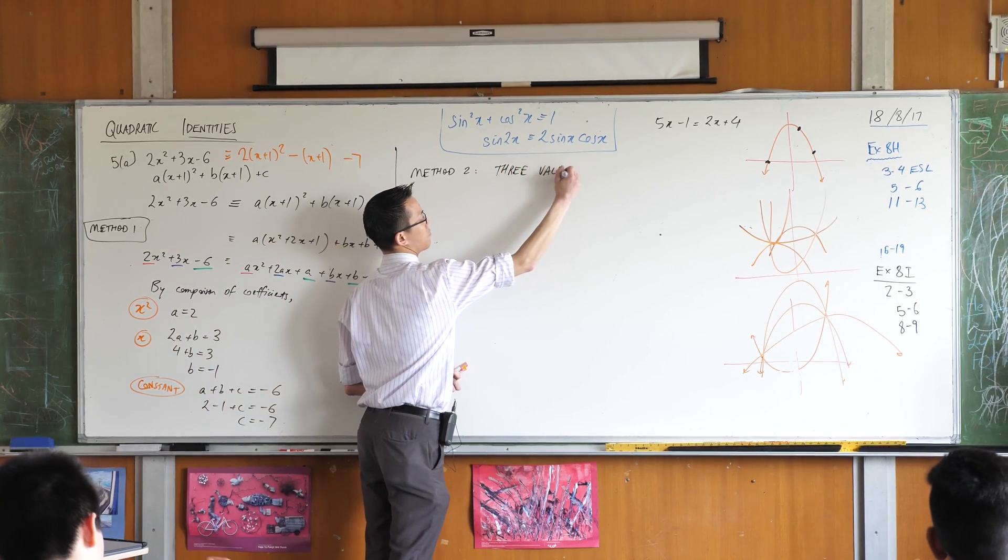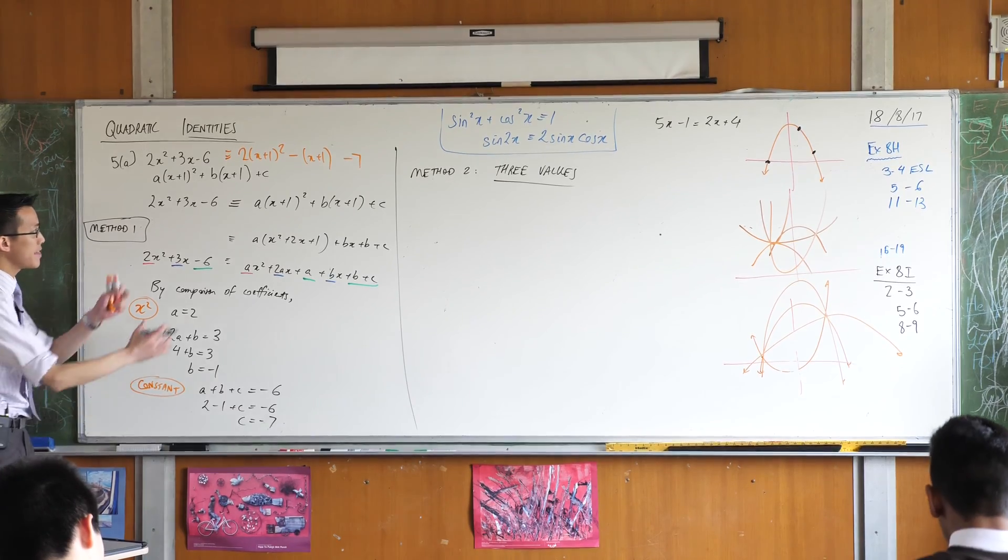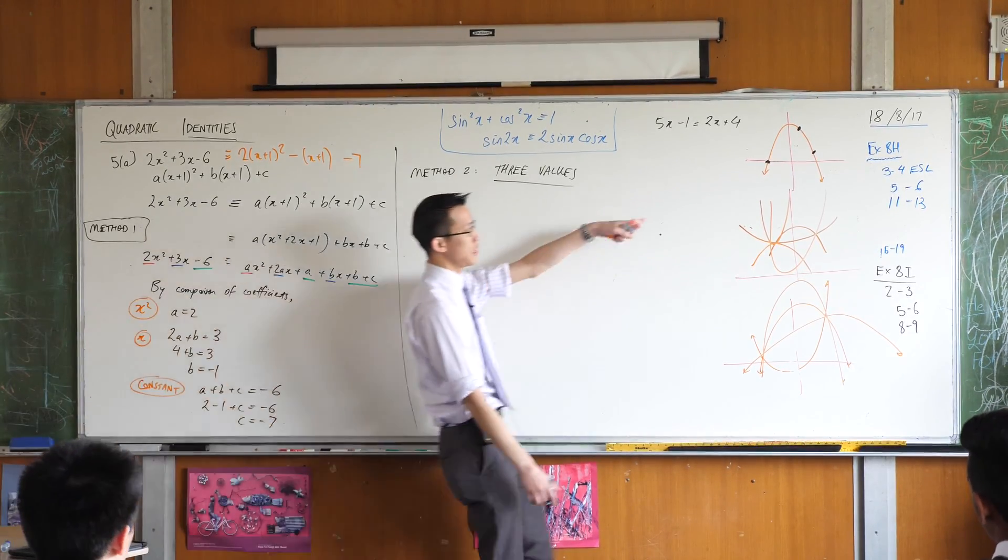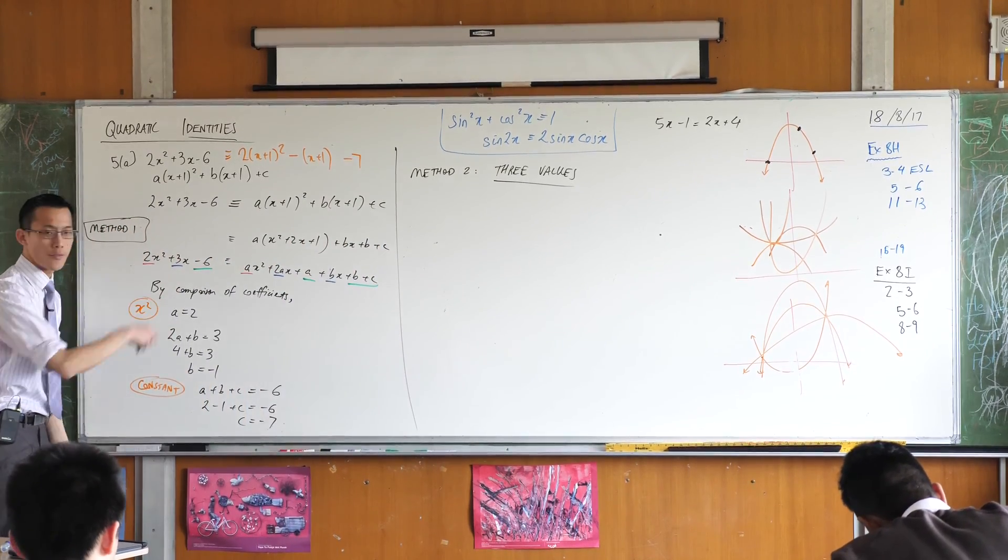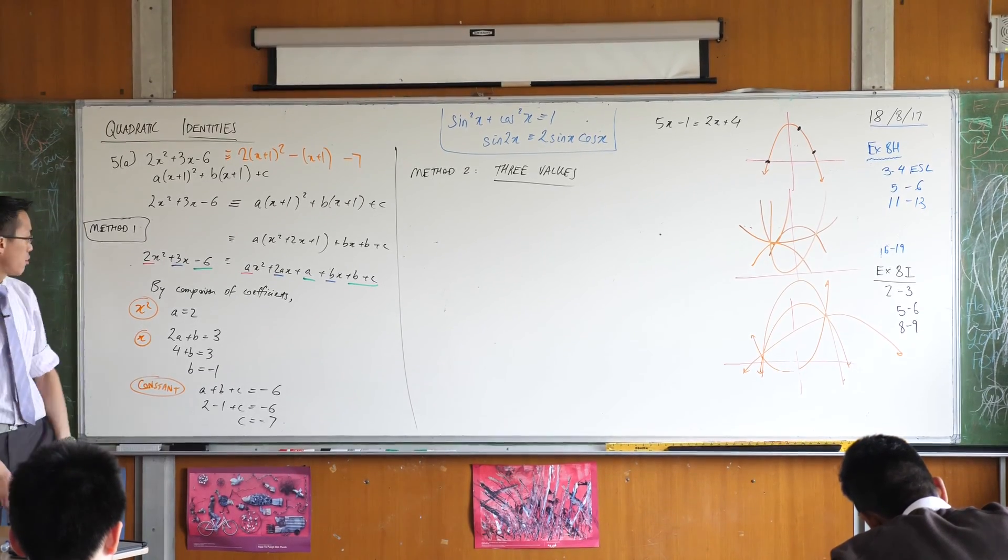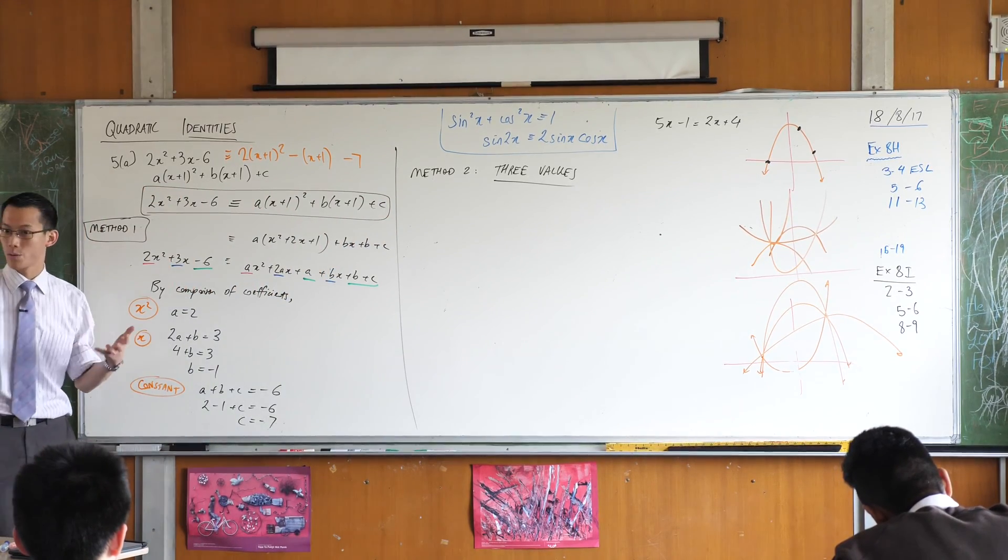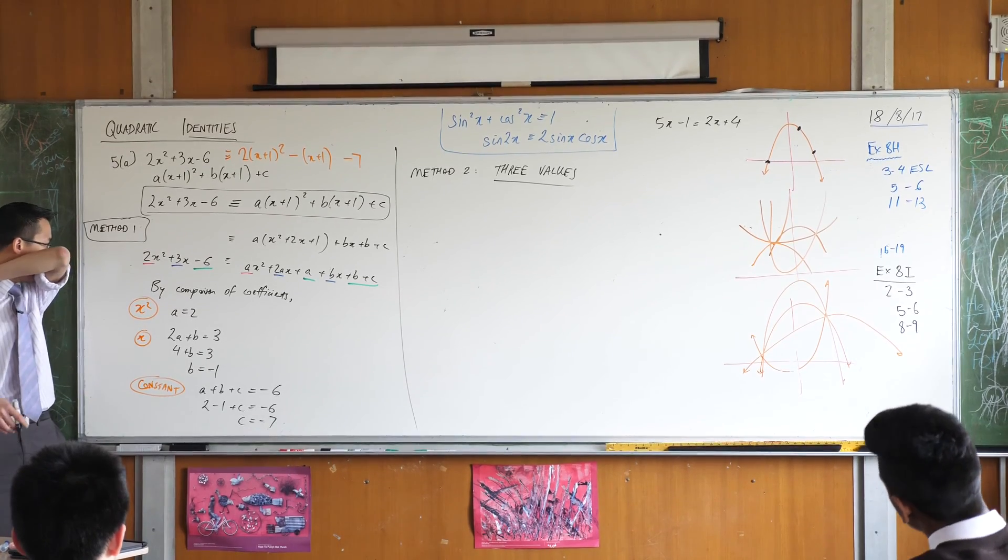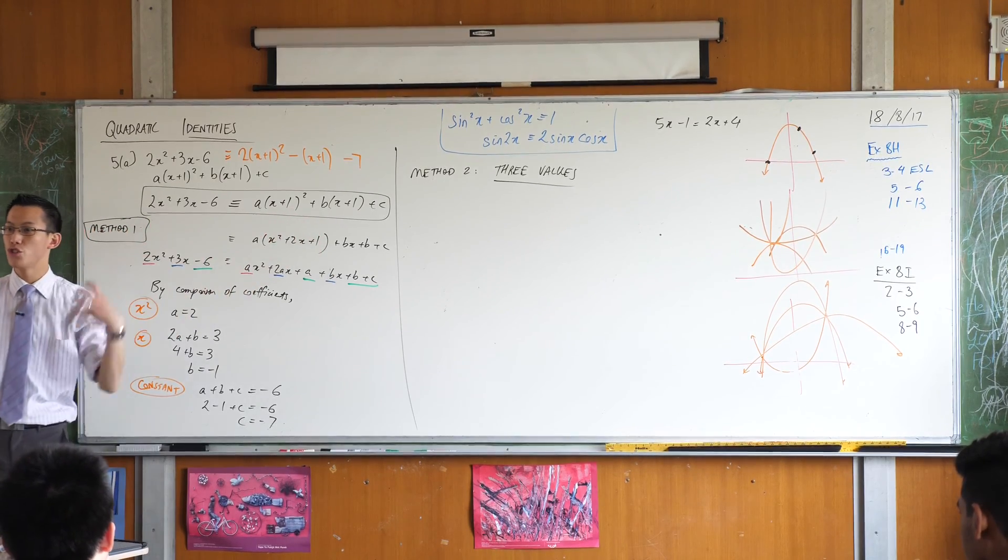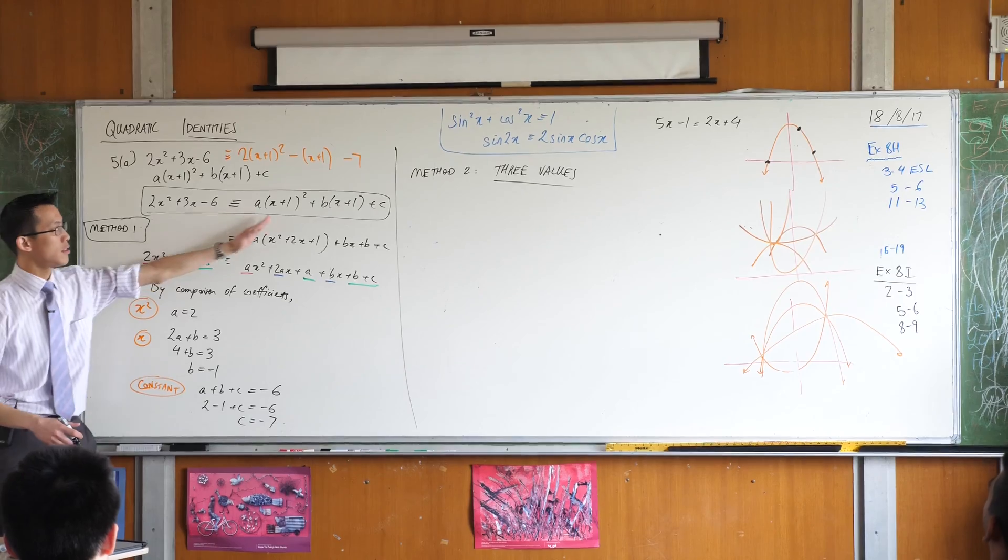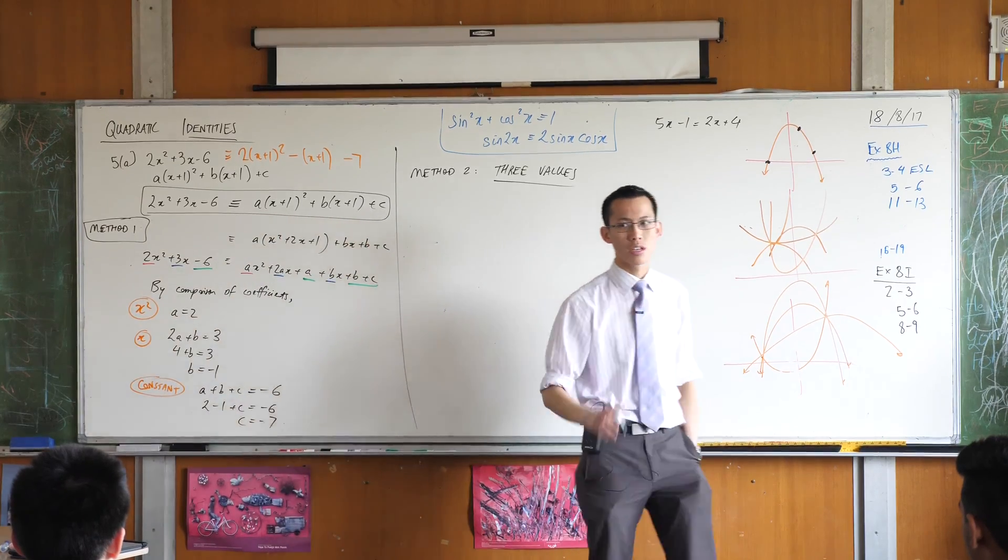So therefore, method two is called three values. I know it's a bit of an awkward name. But the idea is, if you can find three values where these two things are equal, any three values, I could put these anywhere I like, so you have to be a bit creative and imaginative when you choose these, then you should be able to find what a, b, and c are equal to. Let me show you how this unfolds.